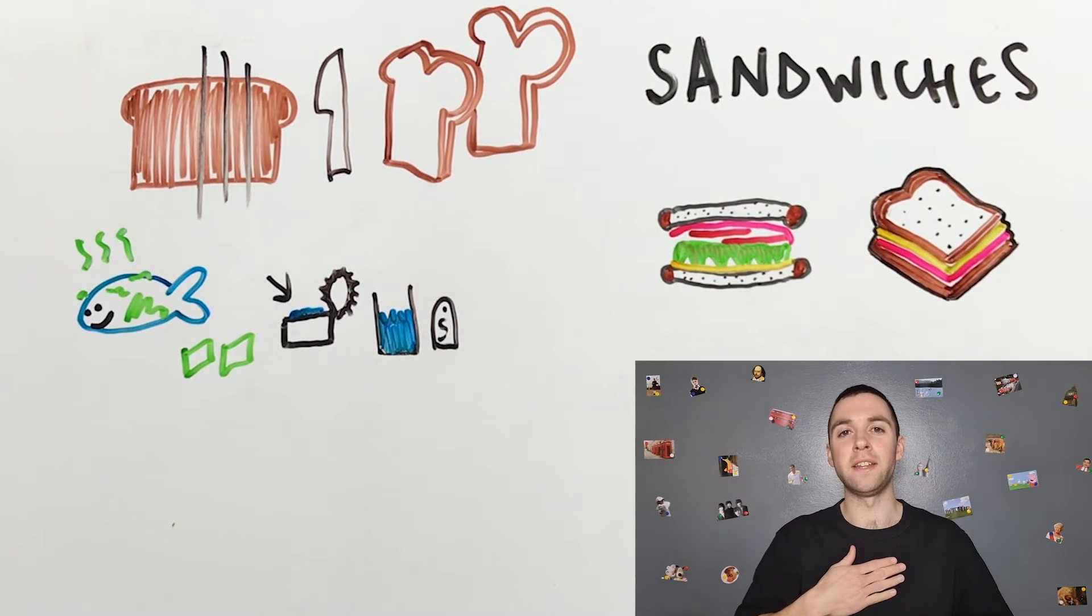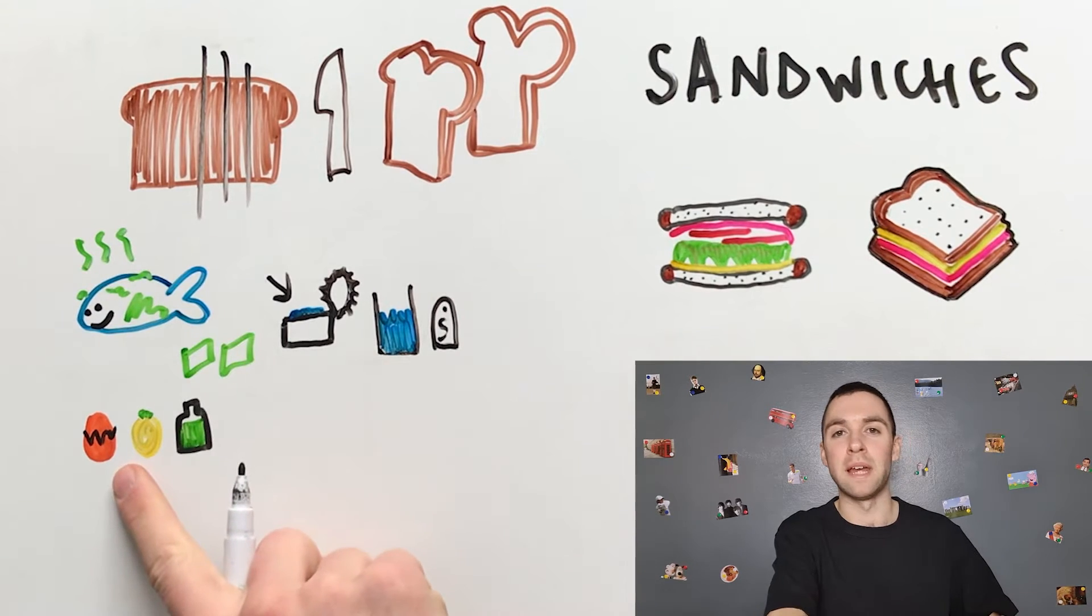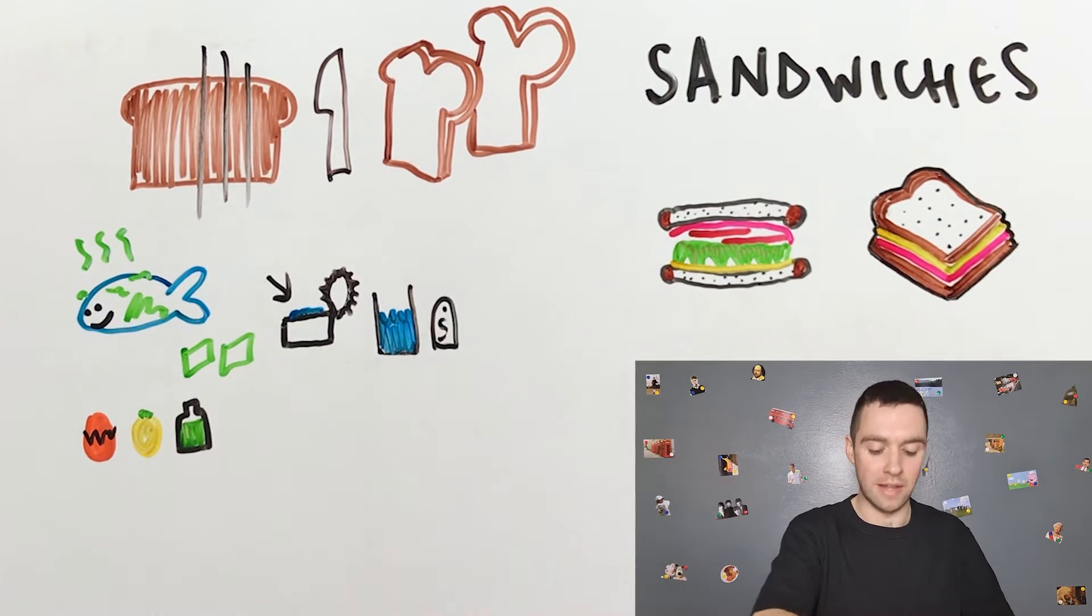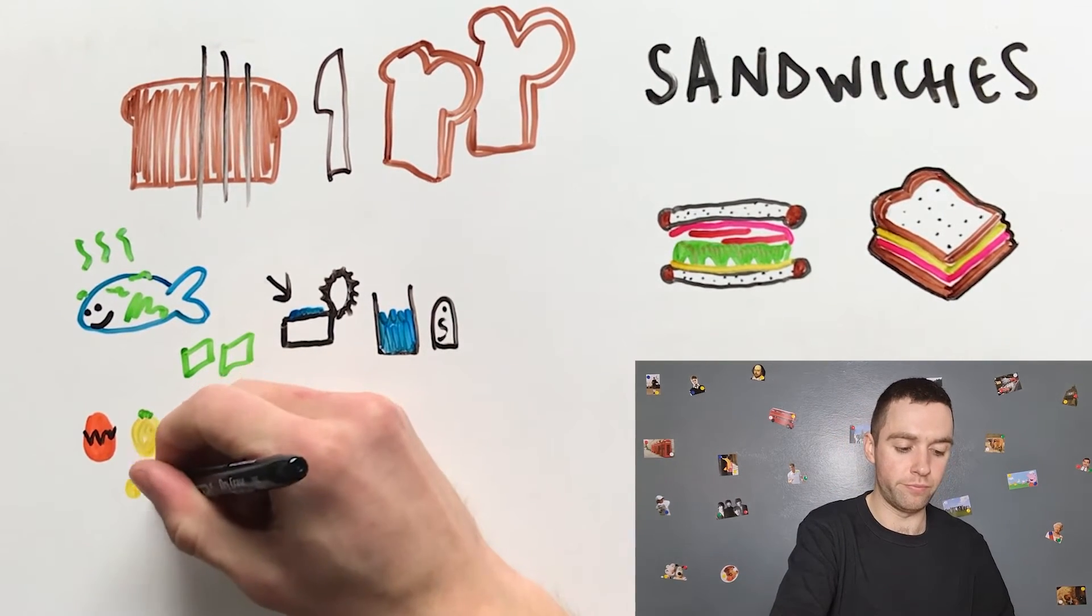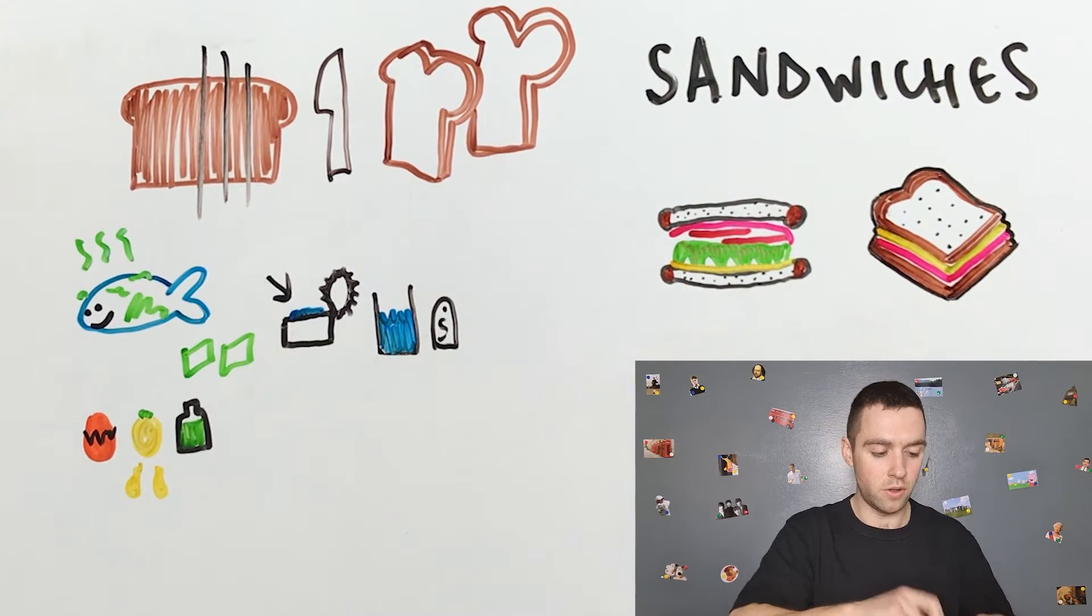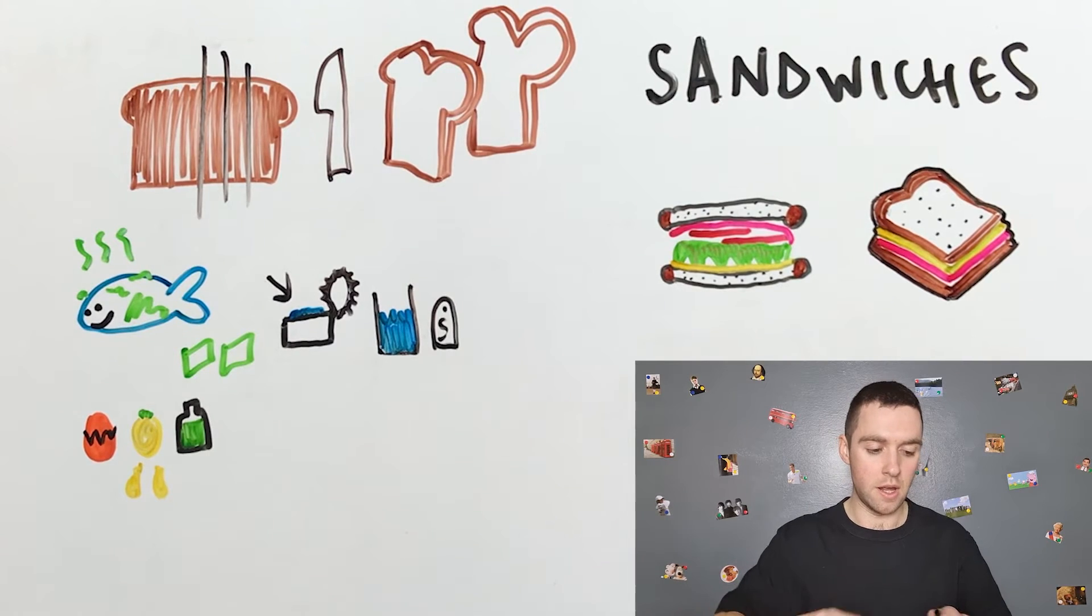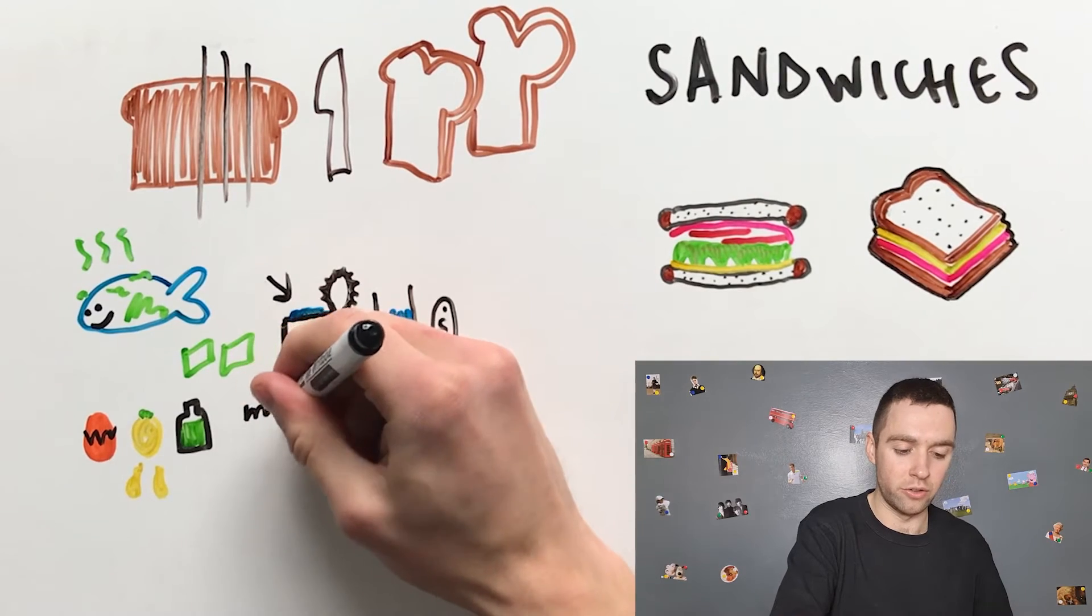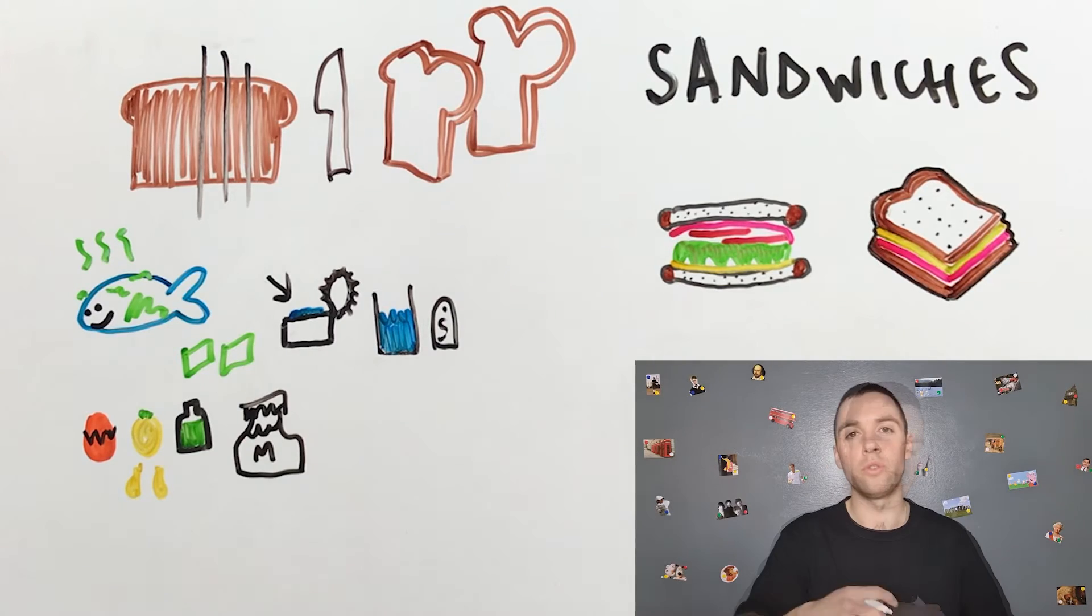So now I need mayonnaise. Mayonnaise is made from eggs, lemon juice—so squeeze the lemon for its juice—and olive oil. But I like to buy a jar of mayonnaise. It's easier.